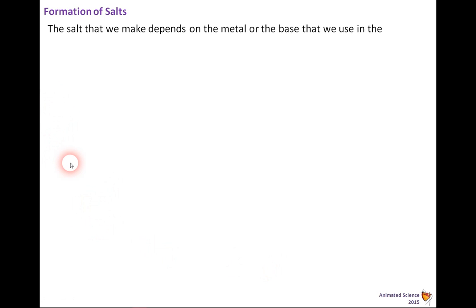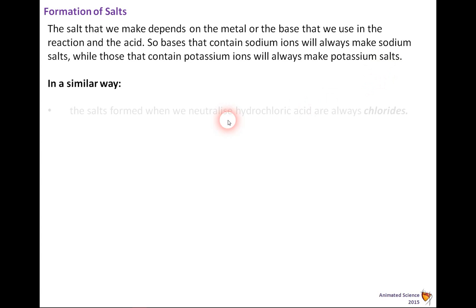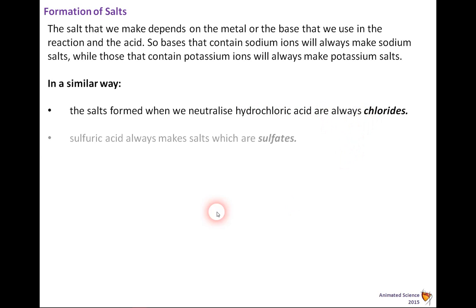Formation of salts: the salt that we make depends on the metal or base that we use in the reaction and the acid. Bases that contain sodium ions will always make sodium salts, while those that contain potassium ions will always make potassium salts. The salts formed when we neutralize hydrochloric acid containing chlorine are always called chloride. You've got to learn that.